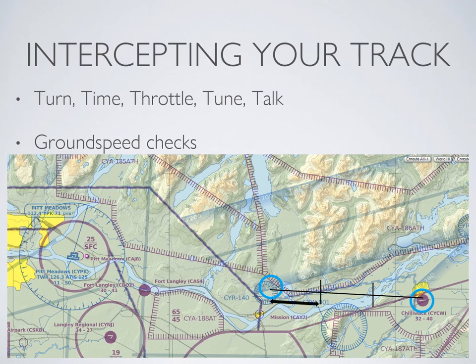I've divided the line into three sections. You can fly one third of the route, time how long it takes, then double that to get your revised ETA. Depending on how long the segment is, you can split your track into more sections. For example, if diverting all the way to Hope, you might split the line into six sections, time the first, and multiply by five to get your updated ETA. Remember that this ground speed check is an approximation, as opposed to a precise calculation as done in the navigation exercise.